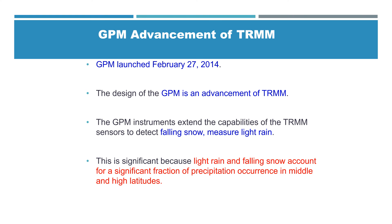This is a significant water resource measurement, especially at high latitudes. The GPM instrument extends the capability of the TRMM sensor to detect falling snow, and it also measures light rain and actual rain.